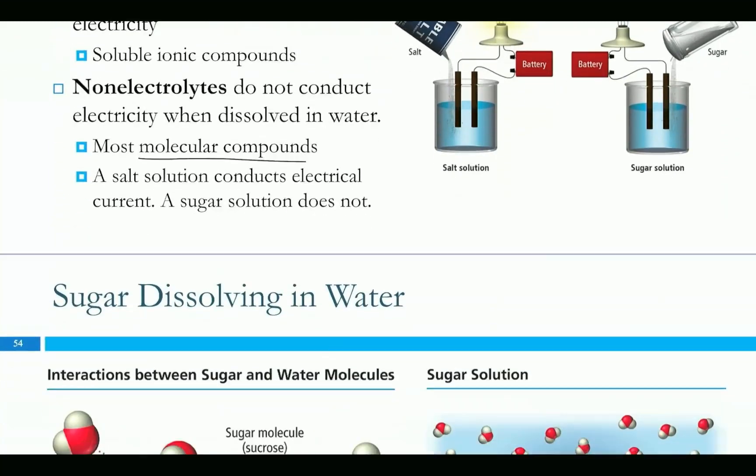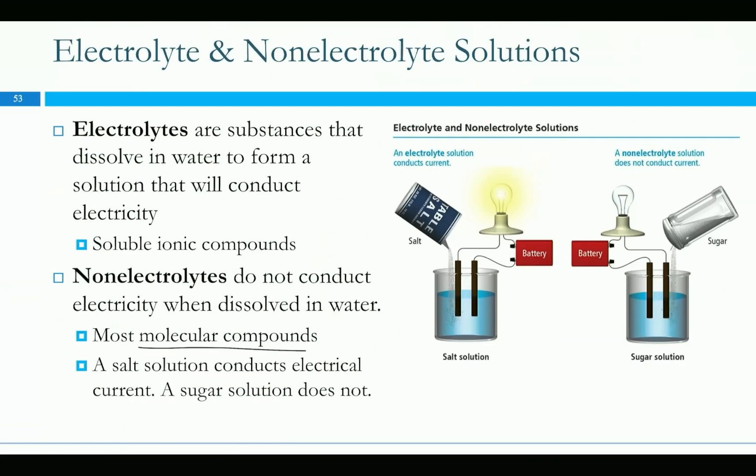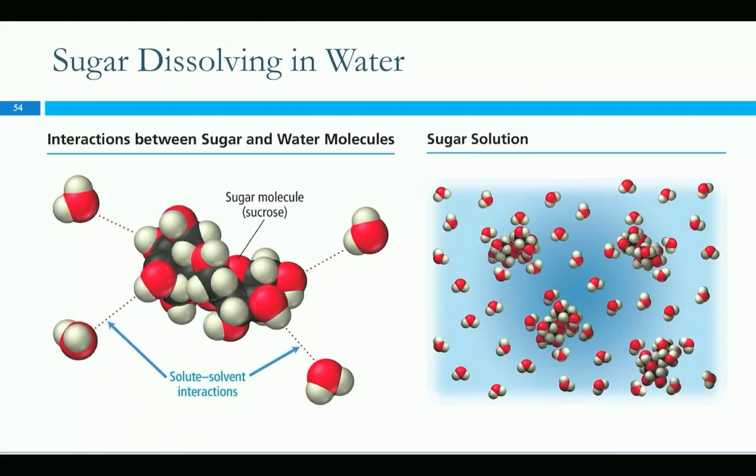Some things conduct and some things don't. Soluble ionic compounds conduct electricity because you'll have something like sodium which will become Na+ and Cl- ions. You have these charged ions in the solution. If you take something like sugar and dissolve it, this is the next Mentimeter slide.